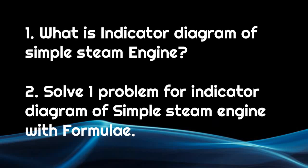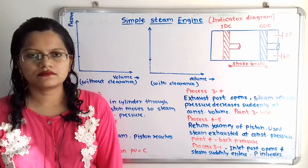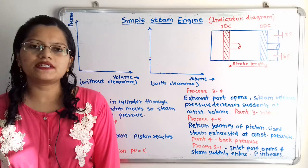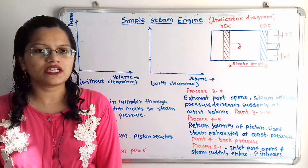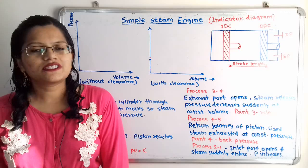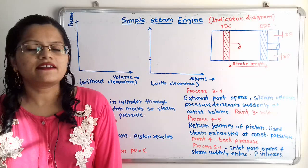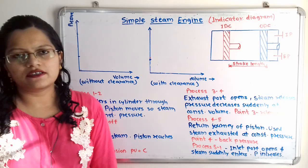The first question is: what is the indicator diagram of a simple steam engine? Let us understand. It is the graphical representation of variation in the pressure and volume of steam inside the cylinder — simply a pressure-volume diagram. Now we will understand how to draw the pressure-volume diagram with clearance and without clearance.